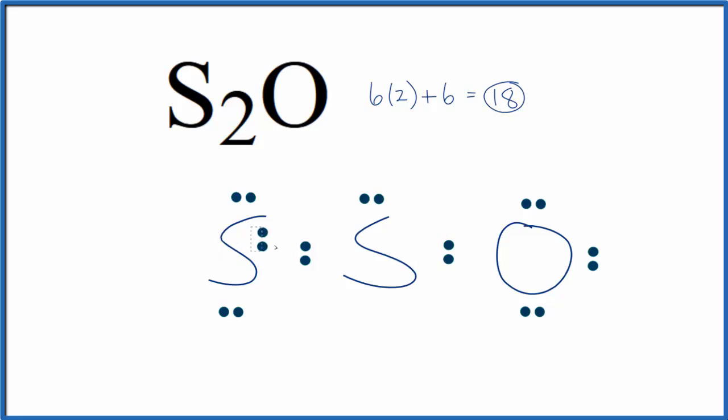So we could move two here to form a double bond. That would give this sulfur eight, this sulfur eight, and this oxygen, it has eight. We could have moved the double bond from the oxygen as well, but let's see what happens with this.